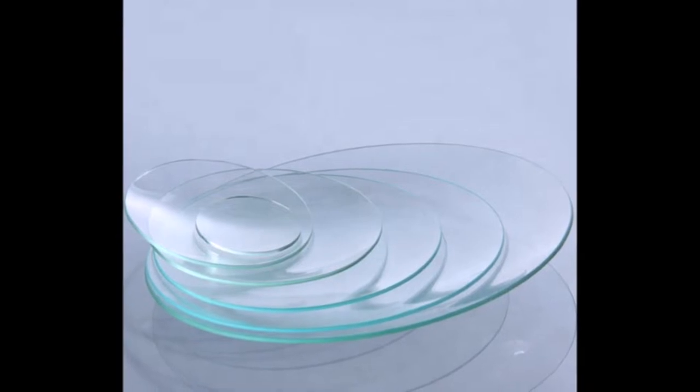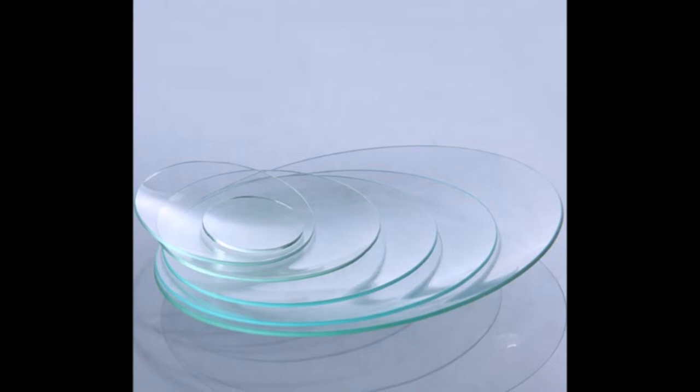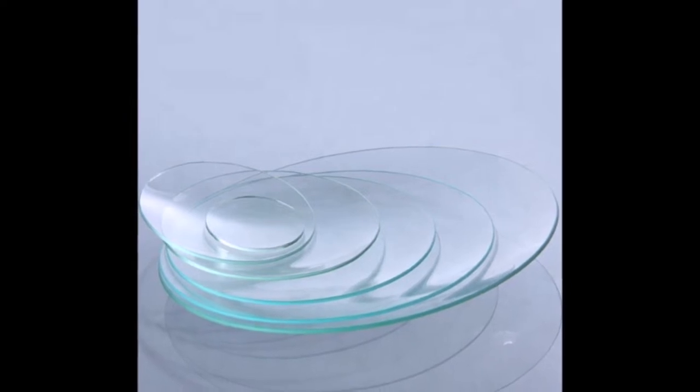Hello friends! Today we are going to see the uses of watch glass. A circular, slightly curved piece of glass used in various laboratories.